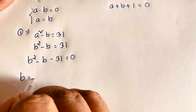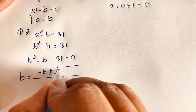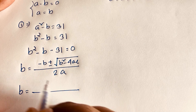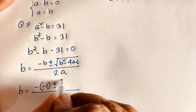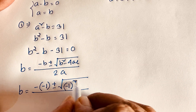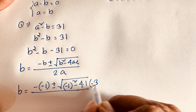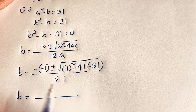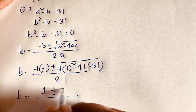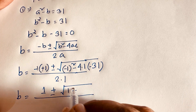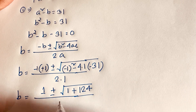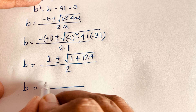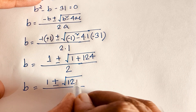V squared minus V minus 31 equals 0. Using the quadratic formula, V equals negative b plus or minus square root of b squared minus 4ac over 2a. Here b is negative 1, a is 1, and c is negative 31. So V equals 1 plus or minus square root of 1 plus 124 over 2, which gives 1 plus or minus square root of 125 over 2.